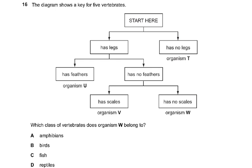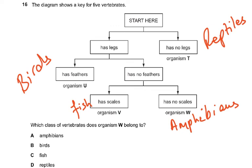Question sixteen: the diagram shows a key for five vertebrates. Has legs or no legs; has feathers or no feathers; has scales or no scales. Has feathers means birds; no legs could be reptiles or fish; no scales could be amphibians; has scales is fish. Following the key, organism W belongs to the amphibians.